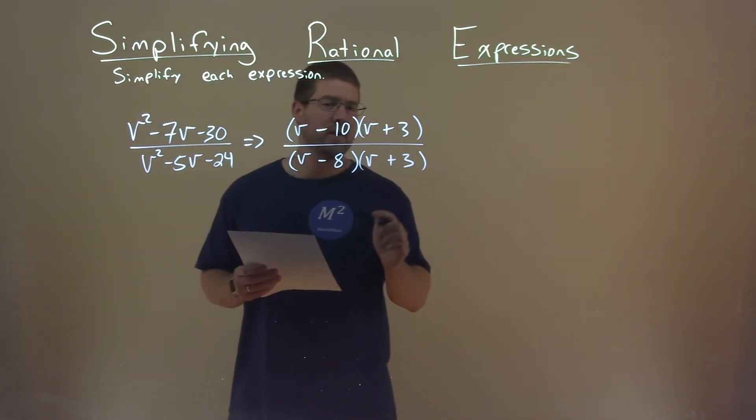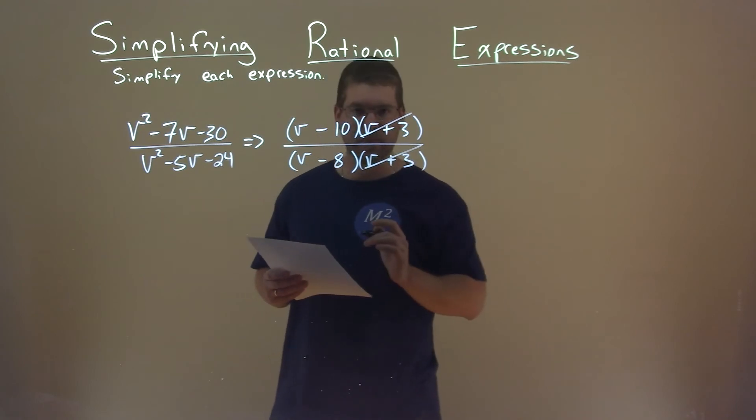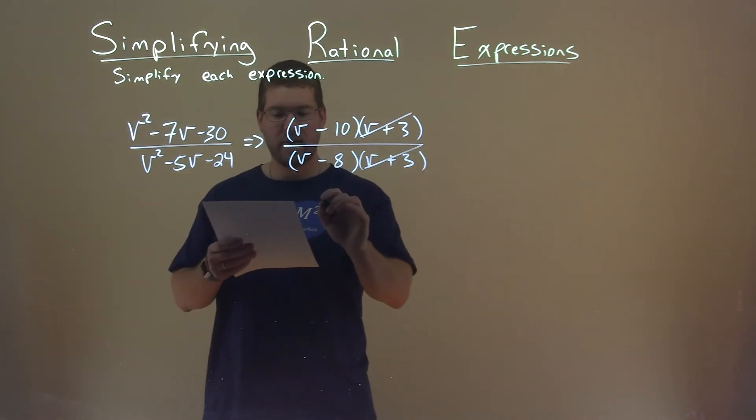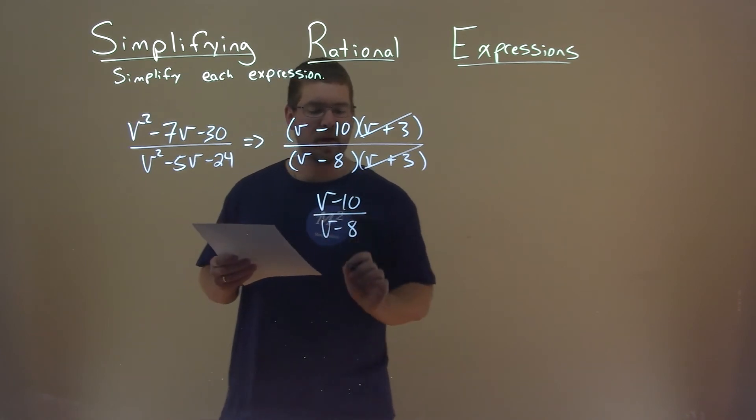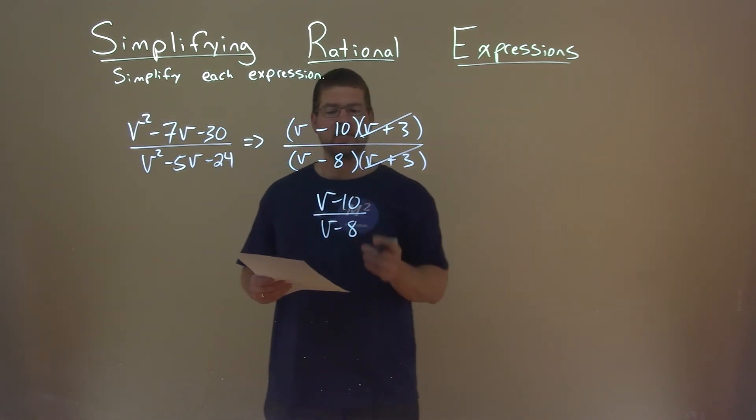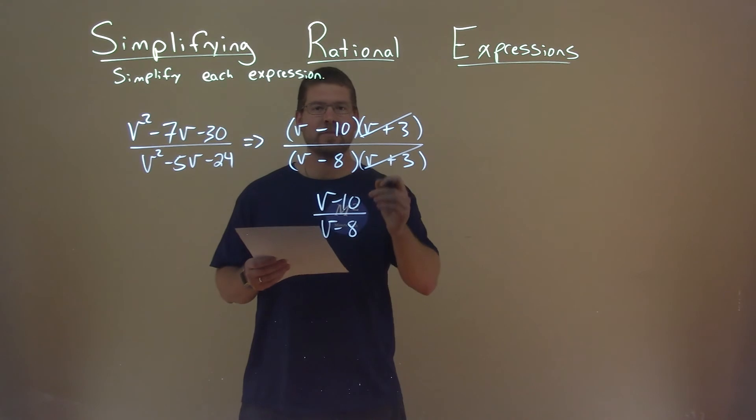Hopefully, you can see now, the v plus 3s cancel. That leaves us here with a v minus 10 in the numerator over v minus 8 in the denominator. And so, v minus 10 over v minus 8 is our final answer.